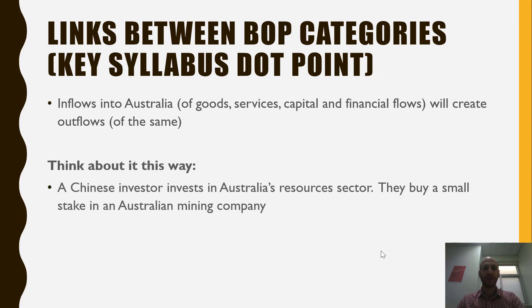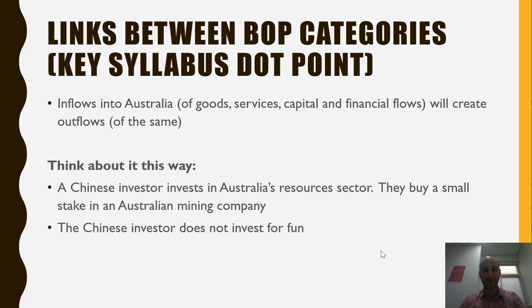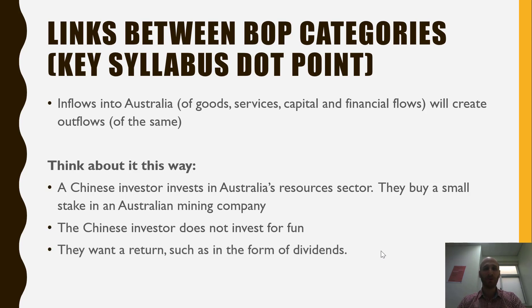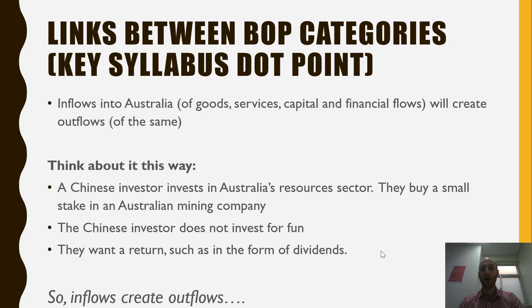A Chinese investor invests in Australia's resources sector — they buy a small stake in an Australian mining company, so this is portfolio investment. The Chinese investor doesn't invest for fun; they want a return, such as in the form of dividends from the Australian company. So the inflow of capital to buy shares in the Australian mining company will then result in outflows to reward the investor.